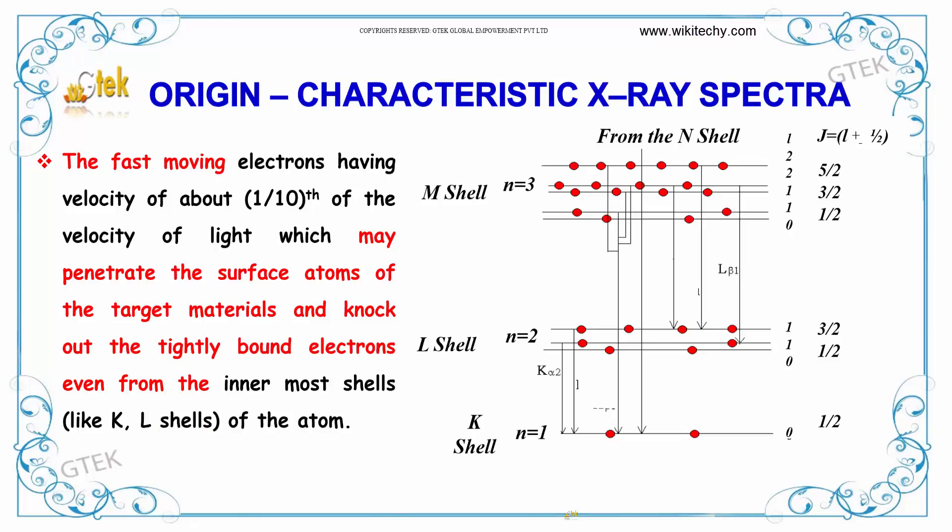You are able to see this is the ground state, so K shell, L shell, M shell and N shell and the electrons are here. From one state the electrons will move to the other state so that it will lose some energy.